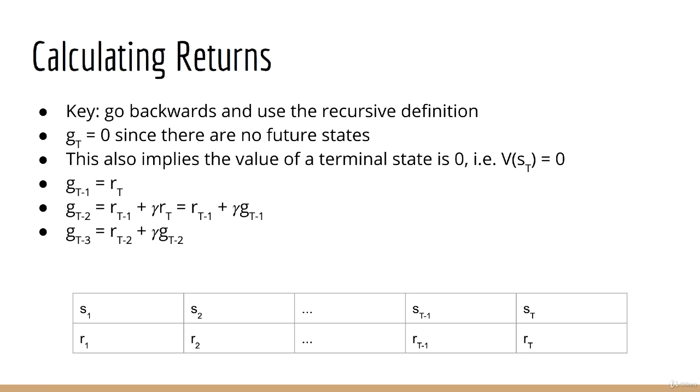And of course this follows for any value of T. So we can say g of T is equal to r of T plus 1 plus gamma times g of T plus 1. So you can keep repeating the same pattern until you calculate the return for each state.